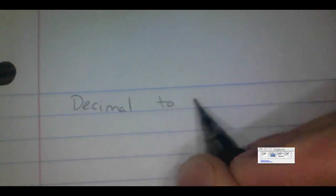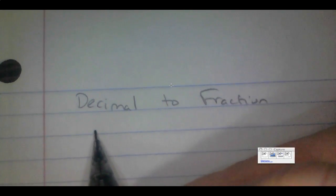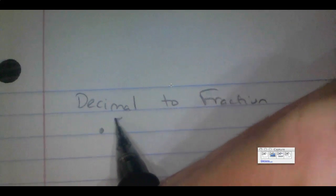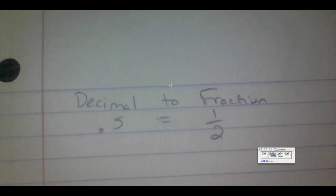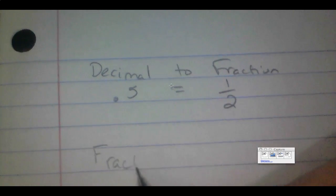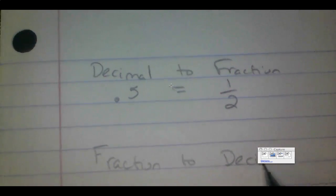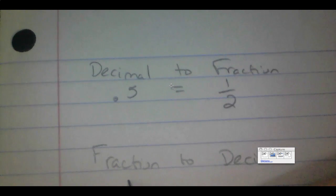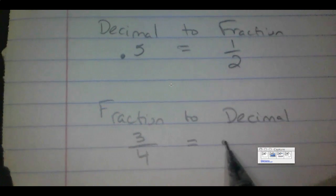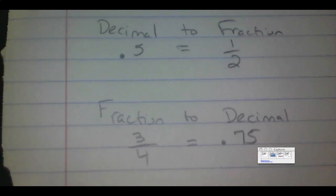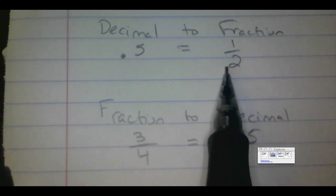The first thing I want to show you is how to go from a decimal to a fraction. For example, 0.5 is a decimal that's the same thing as one-half. I'm also going to show you how to go from a fraction to a decimal — for example, three-fourths. Three fourths of a dollar is 75 cents, so we should get 0.75.